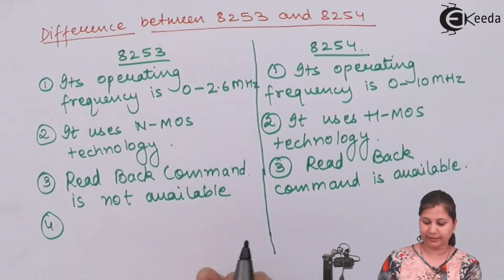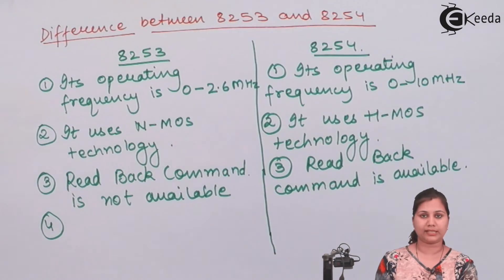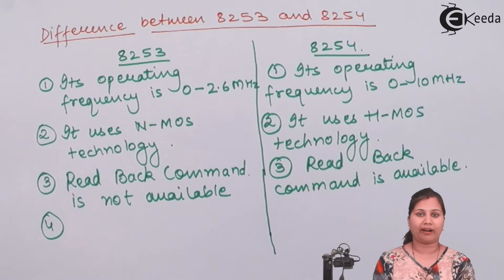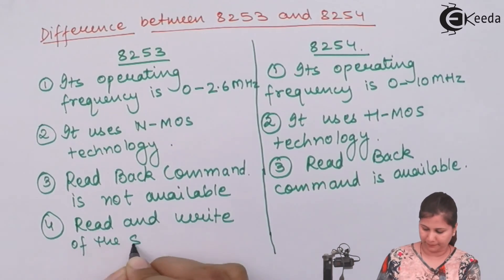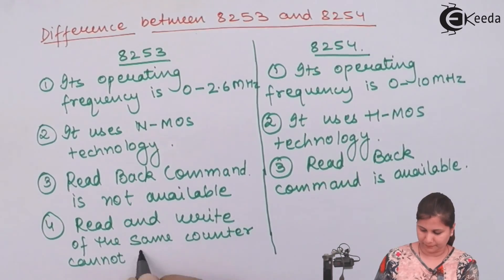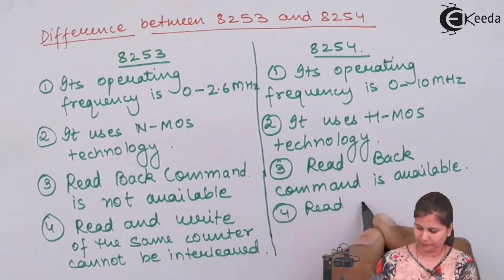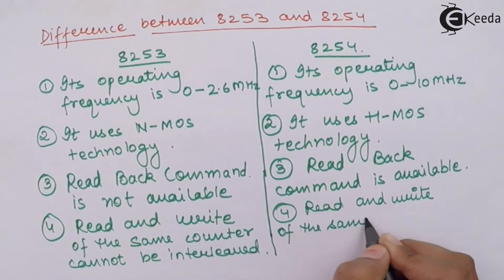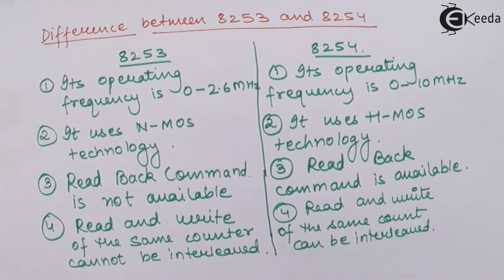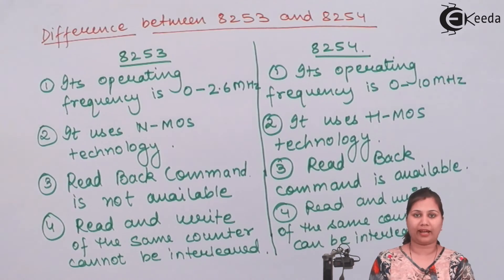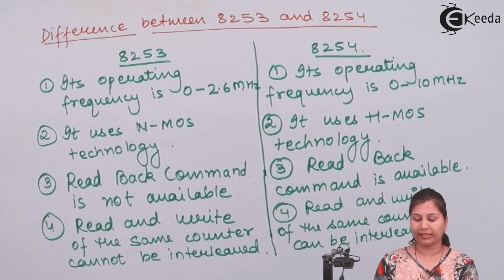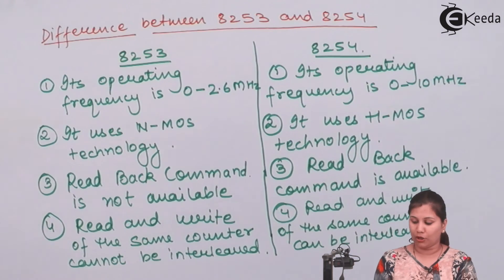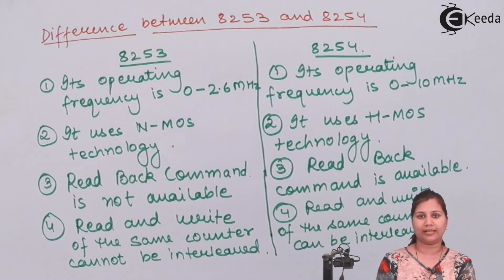The last difference is that in 8253, the read and write of the counters is not interleaved — meaning you cannot read and write the same counter at the same time. For example, if we want to simultaneously read and write timer 0, it cannot be done in 8253, whereas it can be done in 8254. These are the four differences between 8253 and 8254.